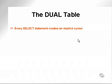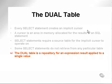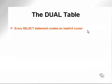So let's go a little further with this. As it says here, every select statement creates an implicit cursor. What I want to do is read off what is typed in on the screen here so that you can refer back to this text and get a very explicit explanation of why the dual table exists. So every select statement creates an implicit cursor.